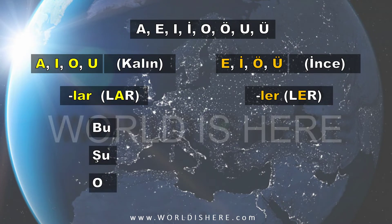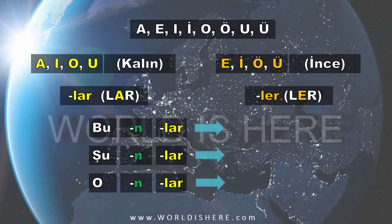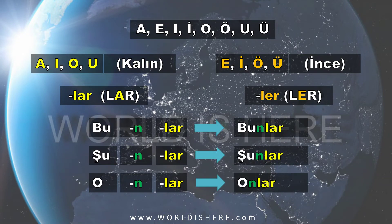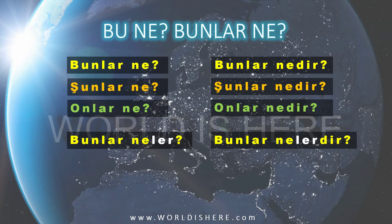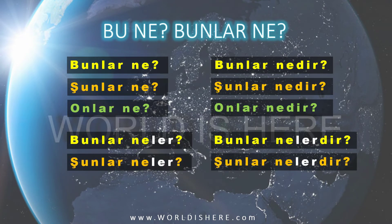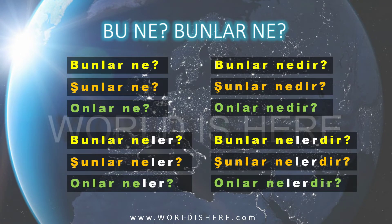After bu, şu, o and their plural forms, we learned how to say 'these,' 'those,' 'they' in Turkish: bunlar, şunlar, onlar. The questions can be: bunlar ne? şunlar ne? onlar ne? or bunlar nedir? şunlar nedir? onlar nedir? or bunlar neler? bunlar nelerdir? şunlar neler? şunlar nelerdir? onlar neler? onlar nelerdir? We use all of them in Turkish, so get used to them. The same applies for the question 'who?' — kim — which has four different variants.